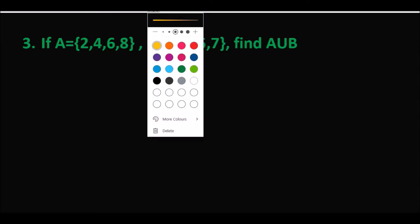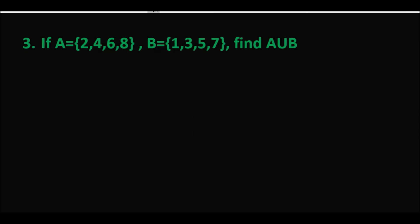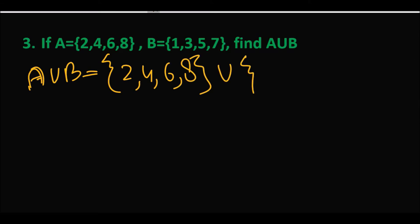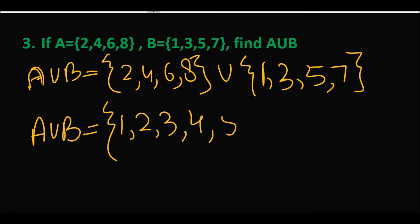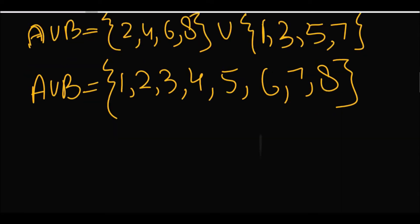A = {2, 4, 6, 8} और B = {1, 3, 5, 7}. अब हम A union B find out करेंगे। Union में basically हम set A और B को combine करके लिखते हैं — उनके जितने भी elements होते हैं वो एक set में आ जाते हैं। एक बात का ध्यान रखना है कि elements sequence से लिखने हैं। तो A union B = {1, 2, 3, 4, 5, 6, 7, 8}.